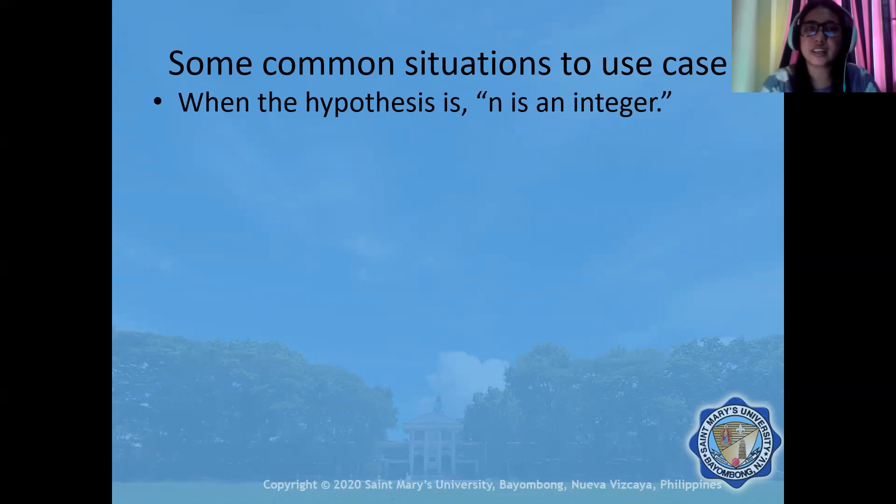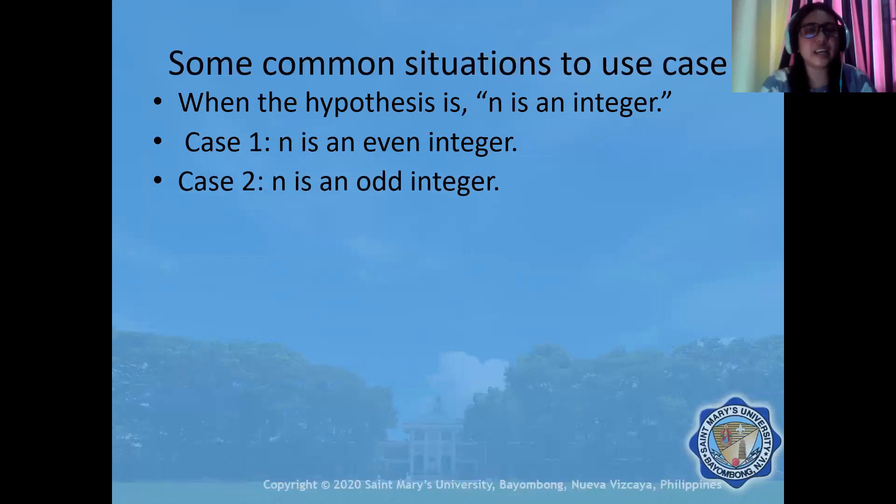For instance, when the hypothesis is n is an integer, and it is not indicated whether it is an odd or even integer, then we have to consider two cases. Case one: what if n is an even integer? Case two: what if n is an odd integer?